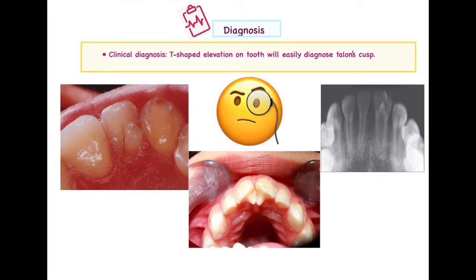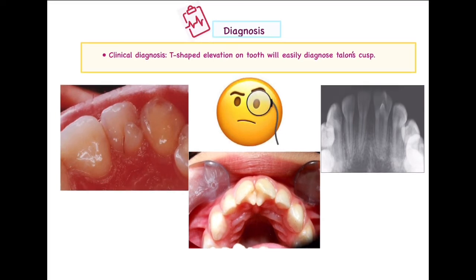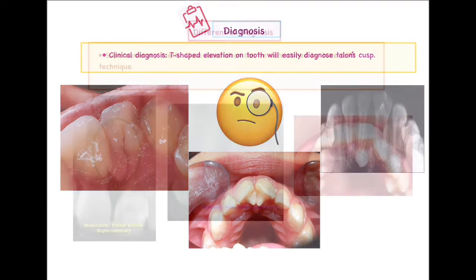Moving on to the diagnosis part: it is very easy to diagnose this condition clinically because of its characteristic shape. Clinical diagnosis is based on the clinical appearance — it appears as a T-shaped elevation on the tooth. In one picture you can see a T-shaped elevation emerging from the cingulum area of a lateral incisor, and in another picture there are bilateral Talon's Cusps on both maxillary central incisors, also appearing as T-shaped structures.